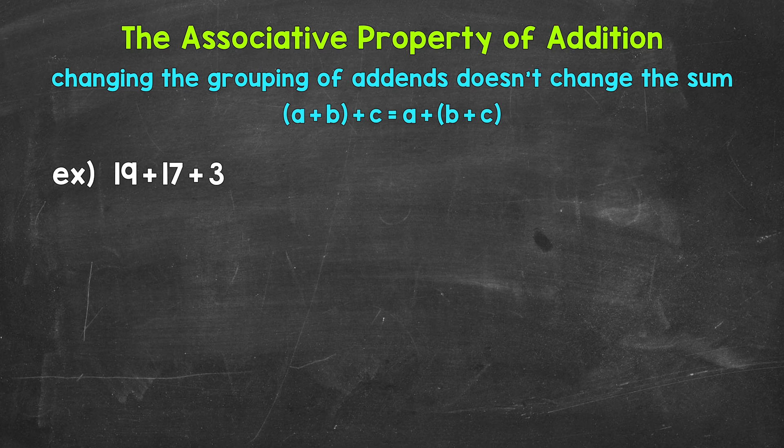When it comes to the associative property of addition, think grouping. This property states that changing the grouping of addends doesn't change the sum. Addends are the numbers being added, and the sum is the answer to an addition problem. So, (a+b)+c will equal the same exact thing as a+(b+c).